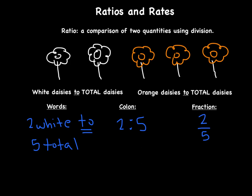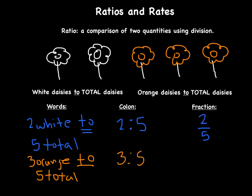I could also do this with the orange daisies — orange daisies to total daisies. I have three orange, and the total stays the same at five. So as a colon: 3 : 5, and as a fraction: three over five. These are both part-to-whole ratios — comparing a part of the group to the whole total.